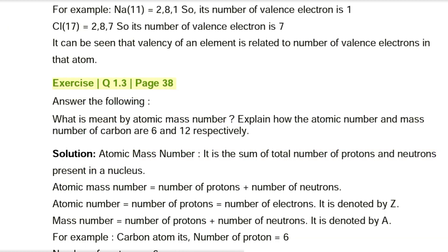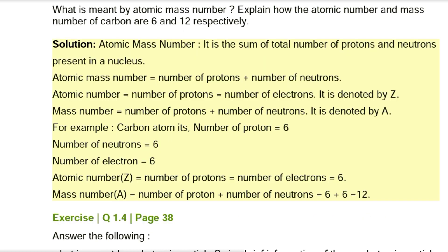Exercise Q1.3, page 38. What is meant by atomic mass number? Explain how the atomic number and mass number of carbon are 6 and 12 respectively. Solution: Atomic mass number is the sum of the total number of protons and neutrons present in a nucleus. Atomic number (Z) equals the number of protons, which equals the number of electrons. For carbon: number of protons = 6, neutrons = 6, electrons = 6. Atomic number Z = 6; mass number A = 6 + 6 = 12.